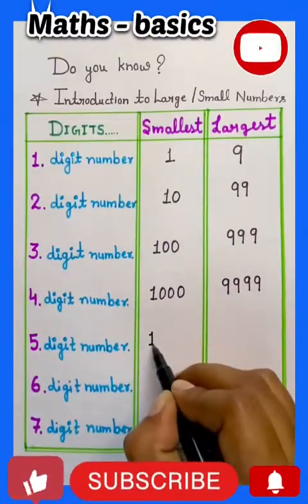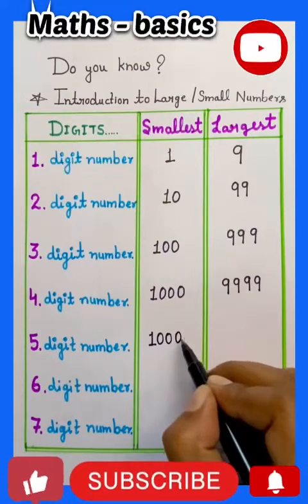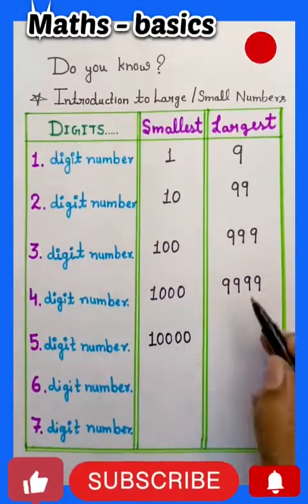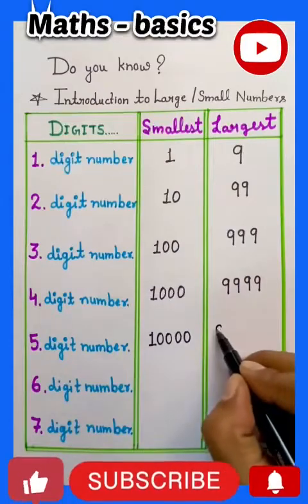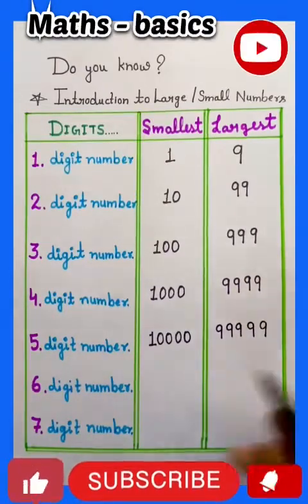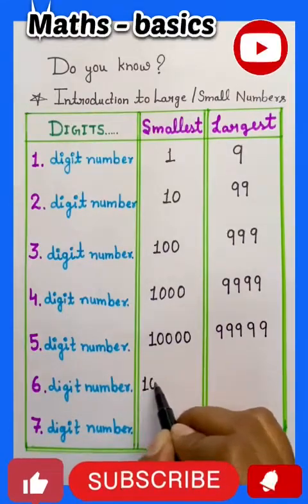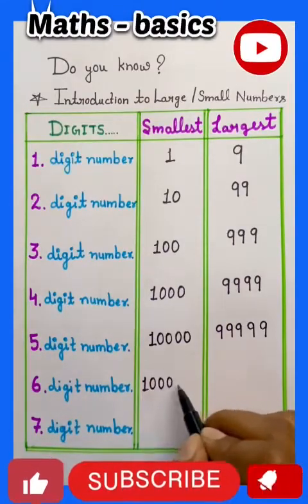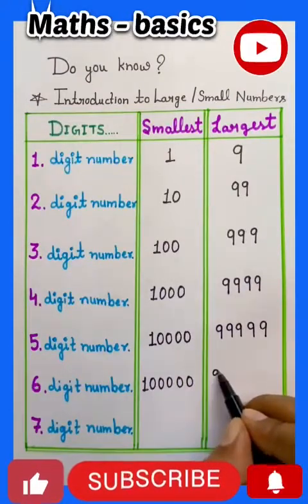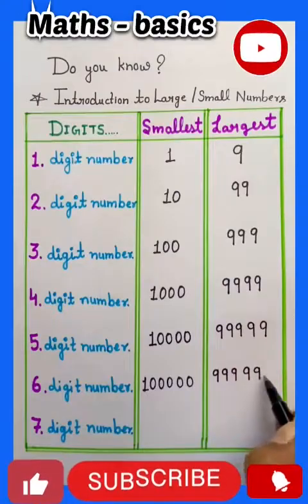The five digit smallest number is one double zero double zero, which is 10,000. The five digit largest number is nine nine nine nine nine, which is 99,999. The six digit smallest number is one double zero double zero zero, which is 100,000, and the six digit largest number is triple nine triple nine, which is 999,999.